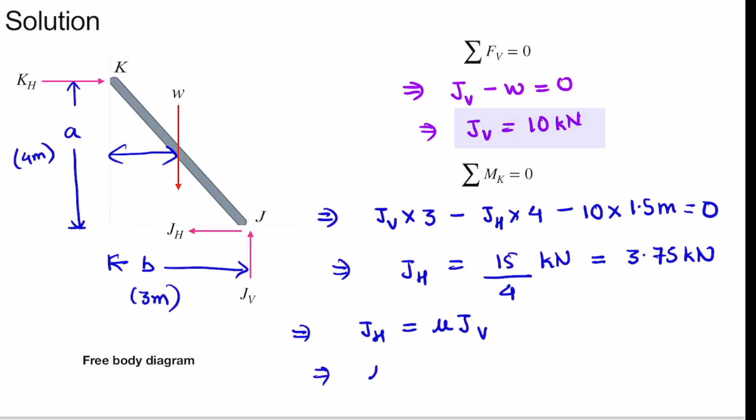This gives us μ equals to JH divided by JV. We'll now put the value of JH and JV. So we'll get μ as 0.375. So this is our final answer.